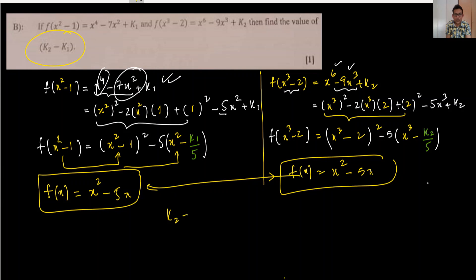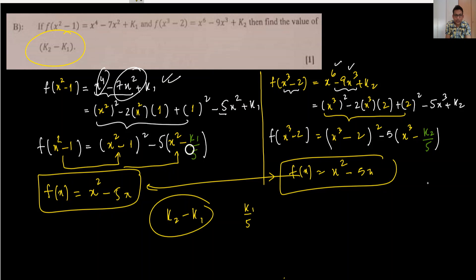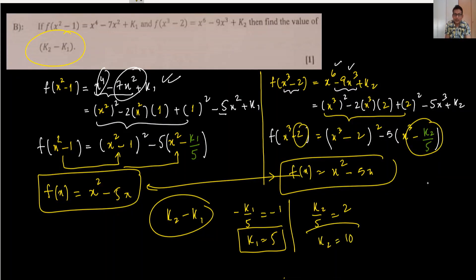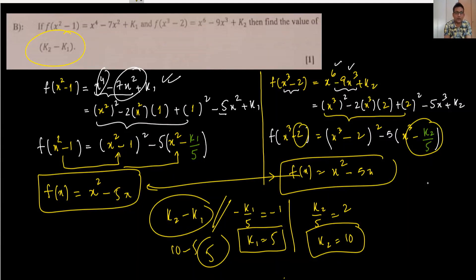With k1 = 5 and k2 = 10, we compute k2 - k1 = 10 - 5 = 5. This completes part b of question 2.